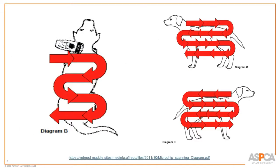The scanning diagram shows starting on the animal's back at the top of the head, doing an S pattern along the back, then going down along the sides as well. I've seen microchips migrate quite a bit — my own cat's chip had migrated way down to her shoulder. You'll find chips in spots other than between the shoulder blades, which is why it's important to scan the whole animal.